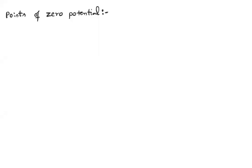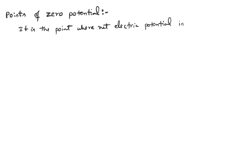This is a continuation of the previous topic: points of zero potential. A point of zero potential is where the net electric potential is zero. For a system of charges, at one particular point the net electric potential should be zero. This means at least one charge must be opposite to the others — if four are positive, the fifth must be negative.